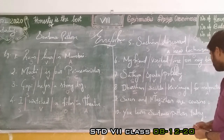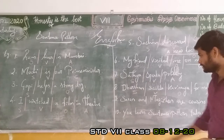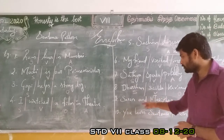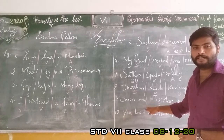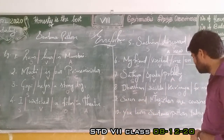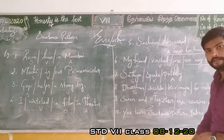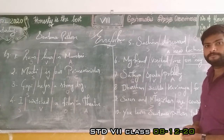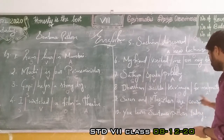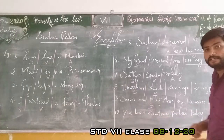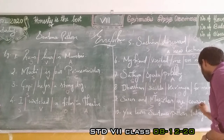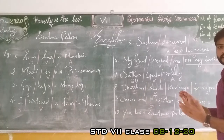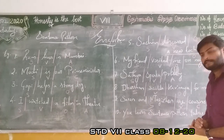Ninth sentence: 'Saran and Mangilal are cousins.' Saran and Mangilal are conjoined with the coordinate conjunction 'and,' so both words together form the subject. 'Are' is a state of being — verb. 'Cousins' — without this word the sentence is meaningless and incomplete, so this is complement. Complement gives complete sense to the sentence.